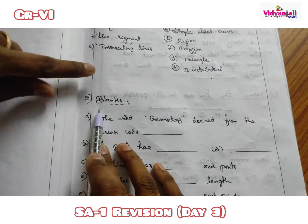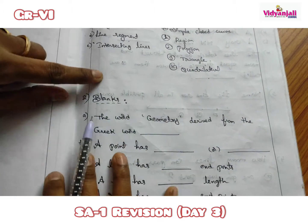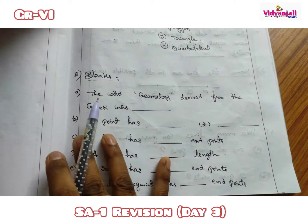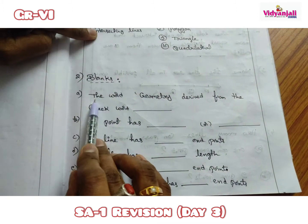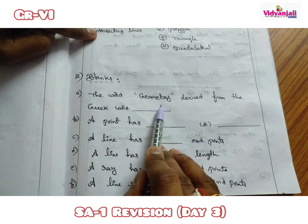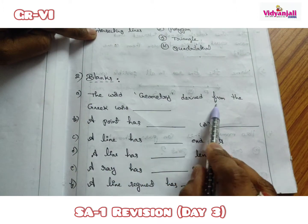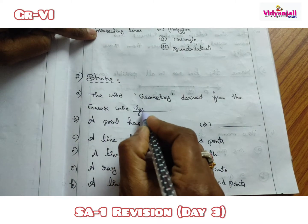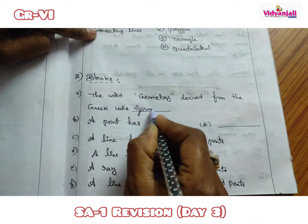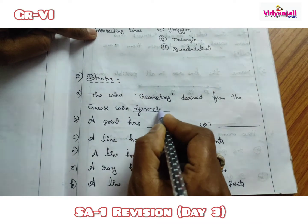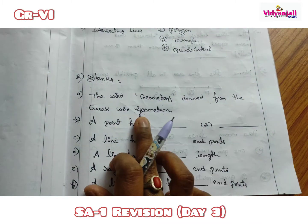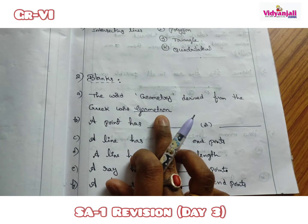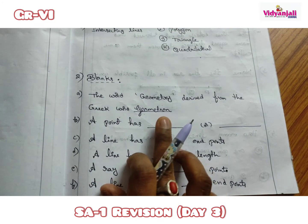The second question is fill in the blanks. Let's discuss the concept. The word geometry is derived from the Greek word 'geometron'. Geo means earth, metron means measurement.